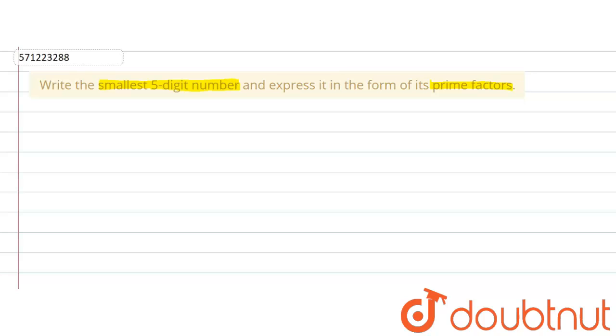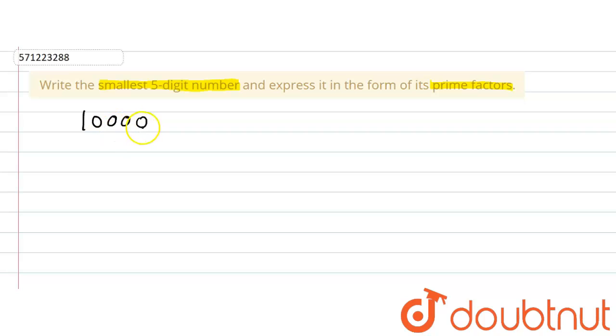So the smallest five-digit number will be 10000 — that is five digits: 1, 0, 0, 0, 0. This is the smallest five-digit number.